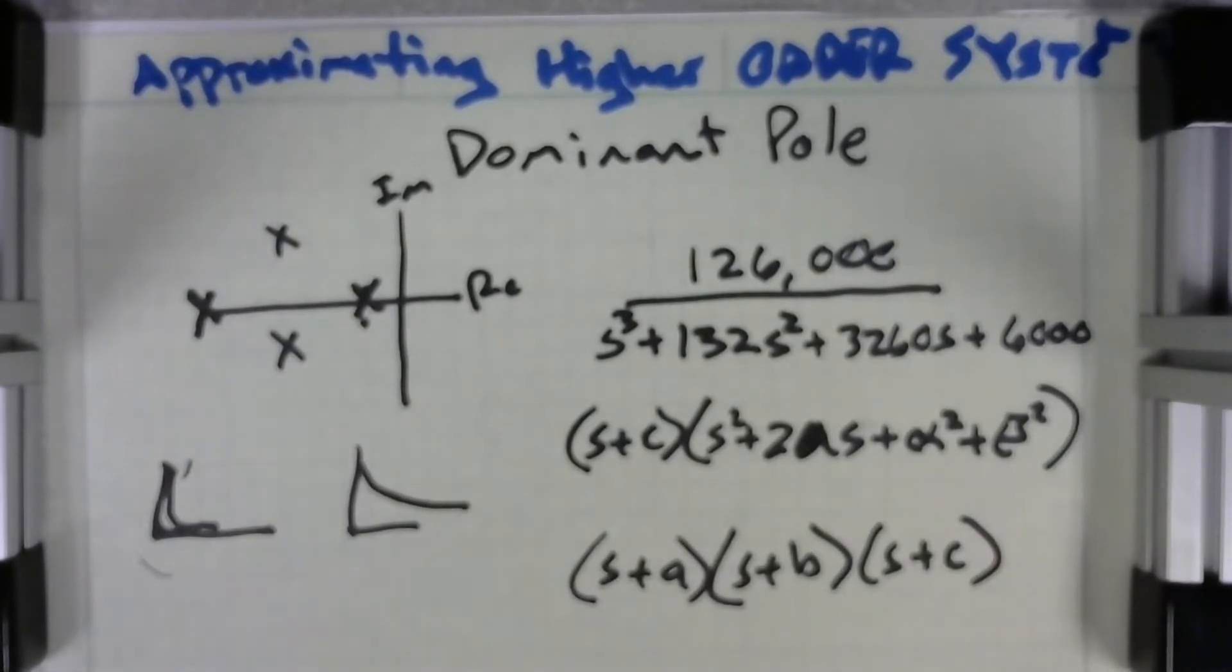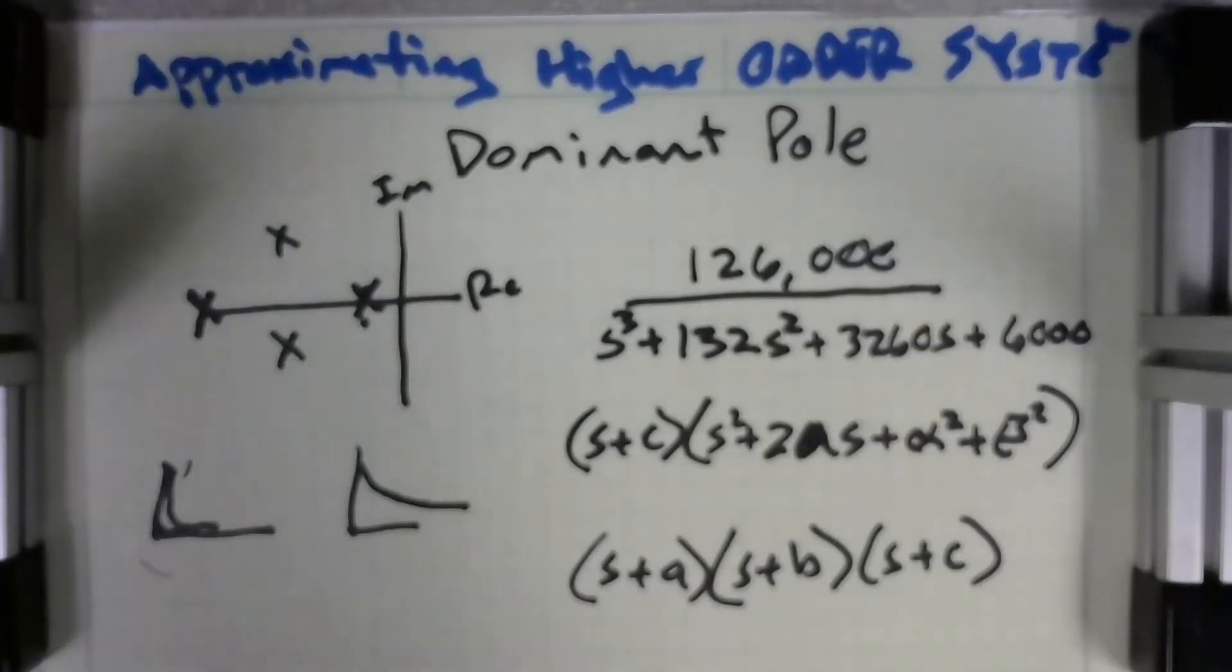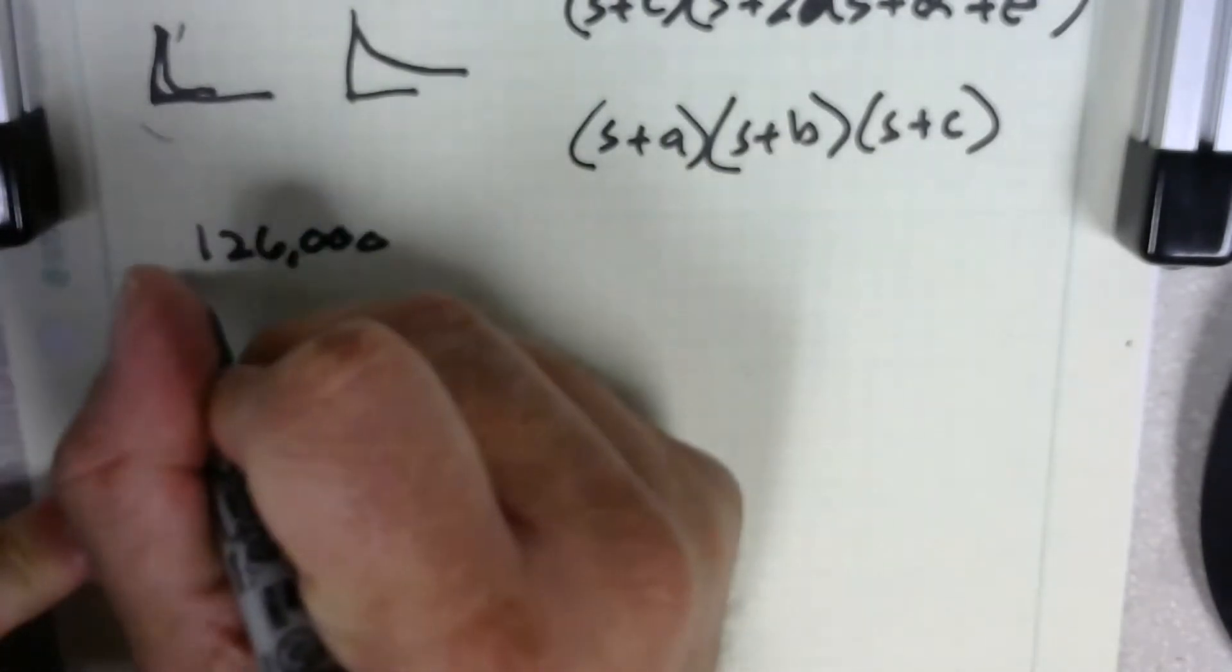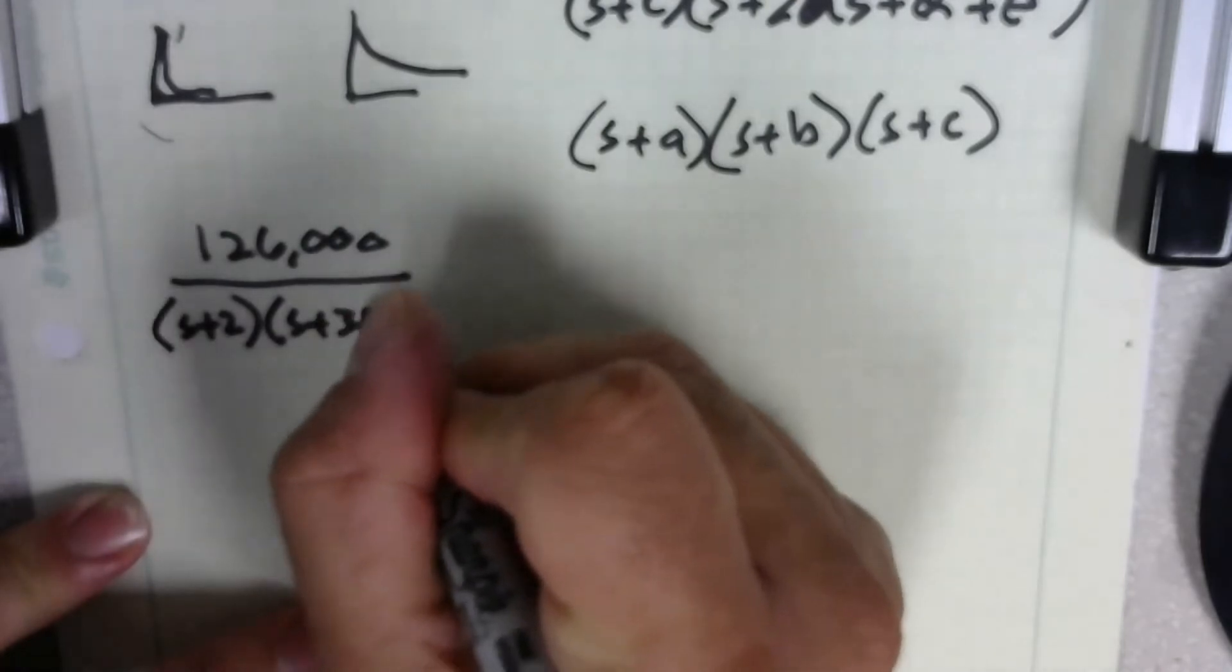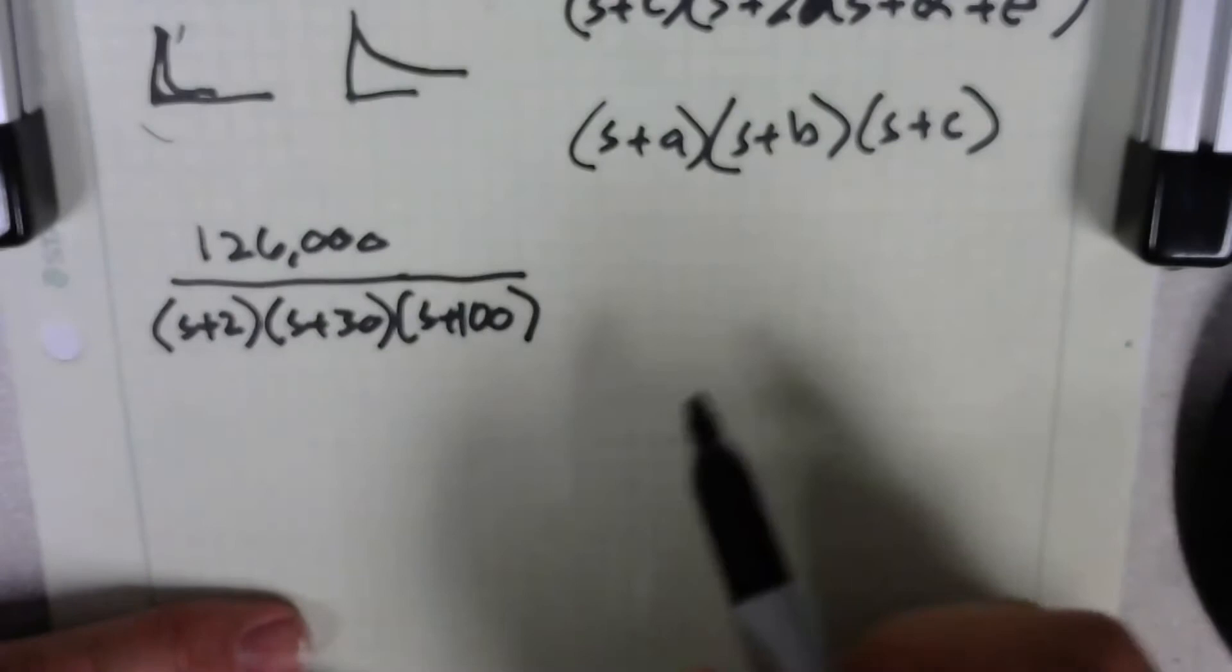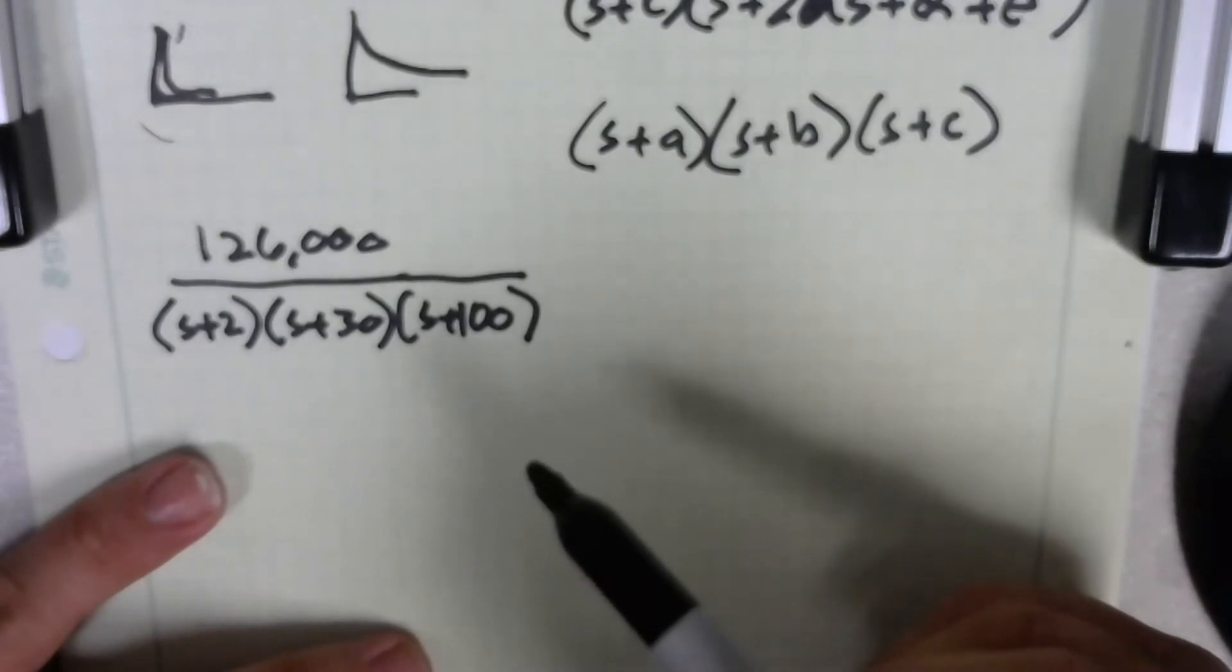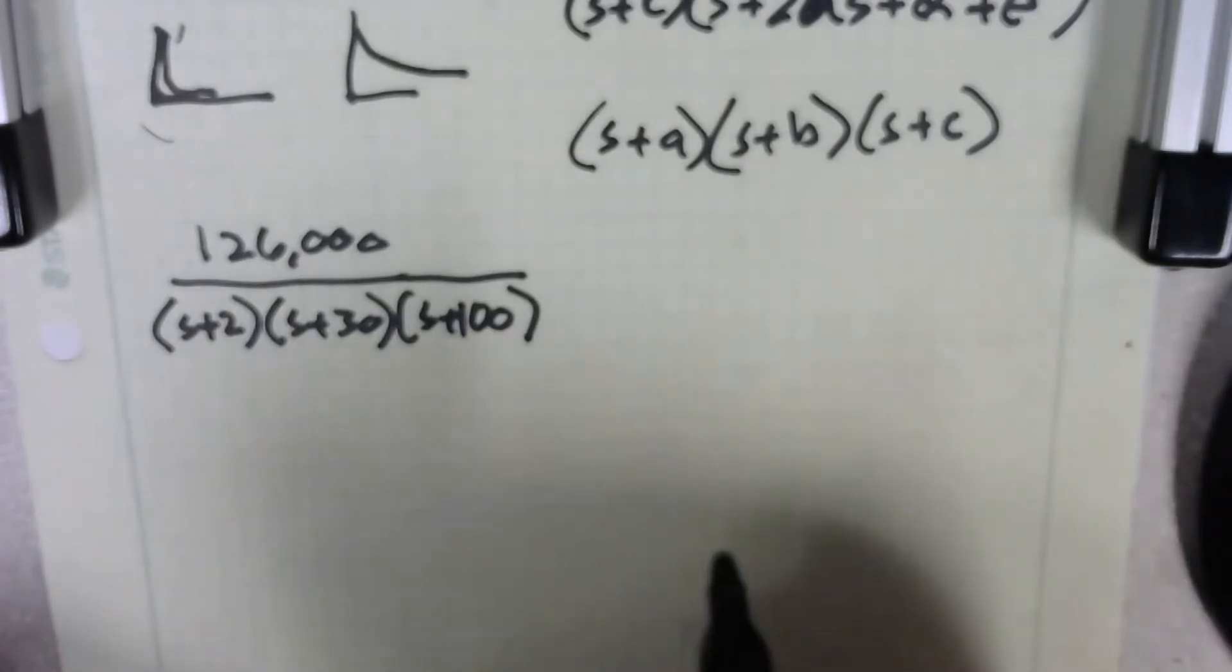It just so happens that this transfer function, this one particularly, it has all real poles. And so let's just rewrite it with the real poles real quick. So we're going to just say that this is 126,000 over (s plus 2)(s plus 30) and (s plus 100). And if you don't see how I got that, neither do I - that's just straight from the calculator. So solving these things, simplifying those higher order terms, it's pretty difficult stuff actually, or time consuming at least. Maybe not difficult, but I rely on the calculator. We have it, why not?